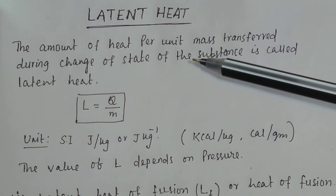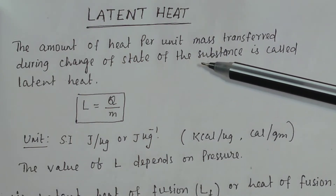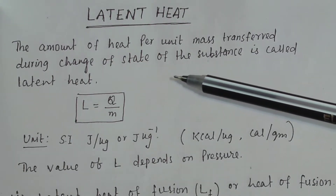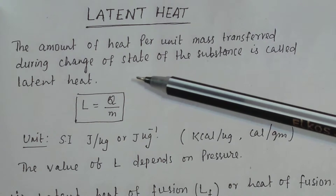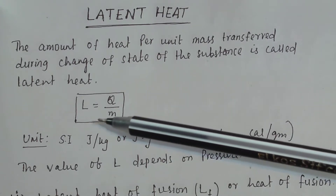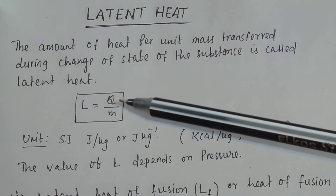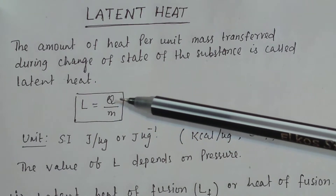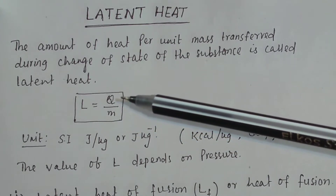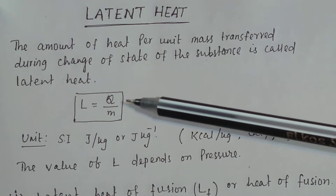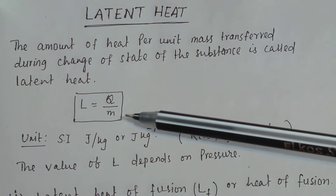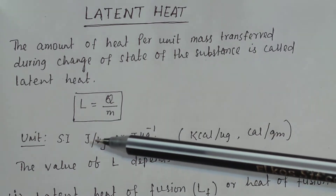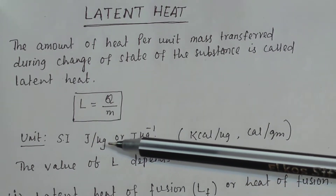Latent heat — the amount of heat per unit mass transferred during a change of state of a substance is called latent heat. It is generally denoted by the symbol L. So L is equal to Q divided by M, where Q is the amount of heat transferred during the change of state and M is the mass of the substance. The unit of latent heat in SI is joule per kg.